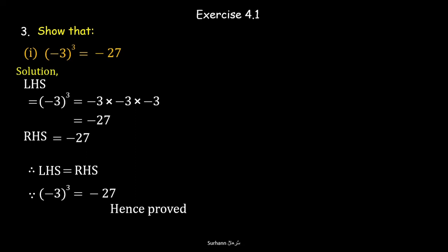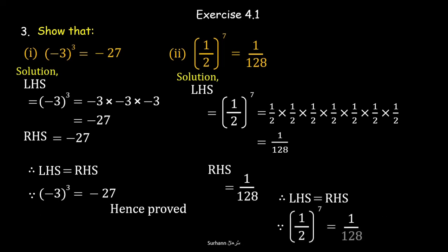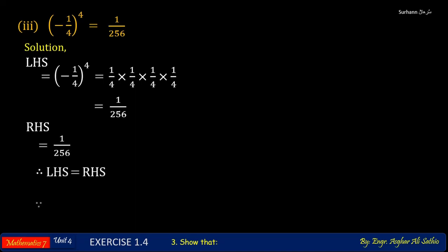Now solve problem number 2. In solution, (1/2)^7, when you multiply 1/2 seven times, you will get 1/128, which is equal to the right hand side value 1/128. Because left hand side equals right hand side, therefore (1/2)^7 is equal to 1/128. Hence proved.